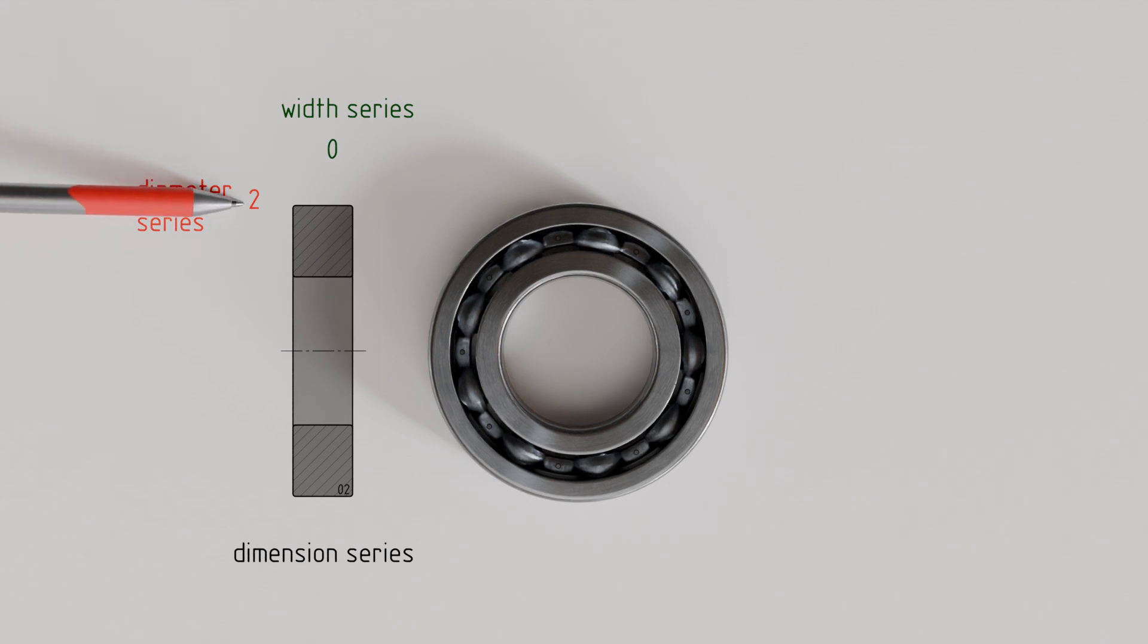In comparison, let us consider a bearing with the next larger diameter series 3 while keeping the width series 0 unchanged. With the same bore diameter, the outer diameter of the bearing increases, and at the same time the width slightly increases despite the same width series.